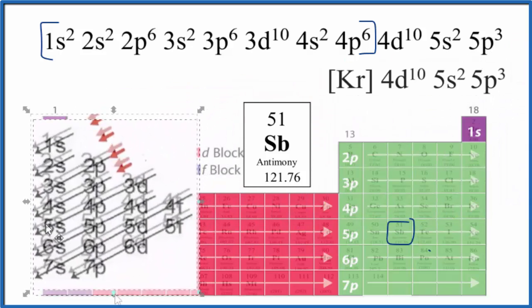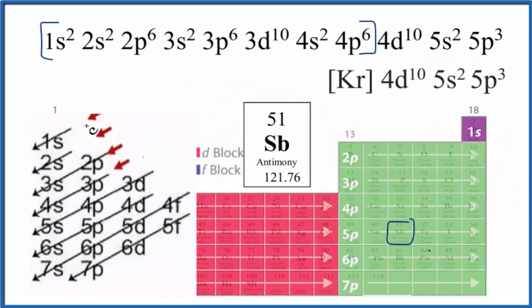We have our chart here. We just follow this along: 1s2, 2s2, all the way until we've used 51 electrons, and that takes us to 5p3, which is the same thing we would find here.